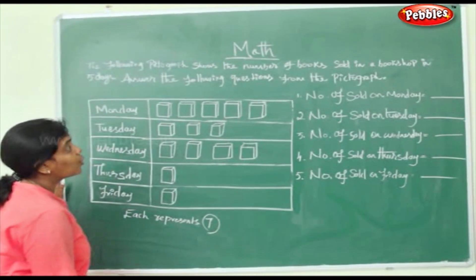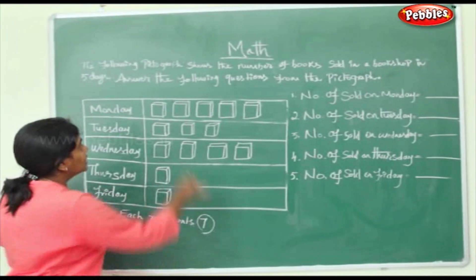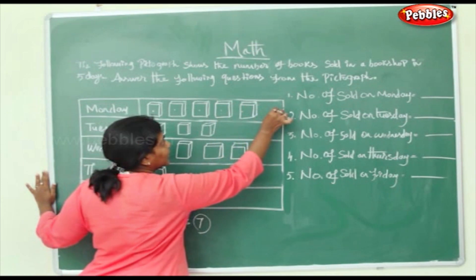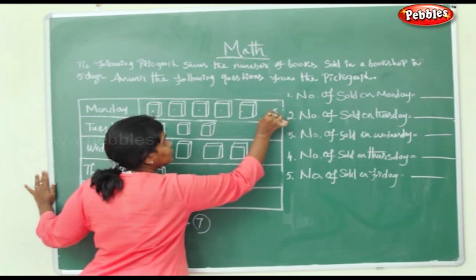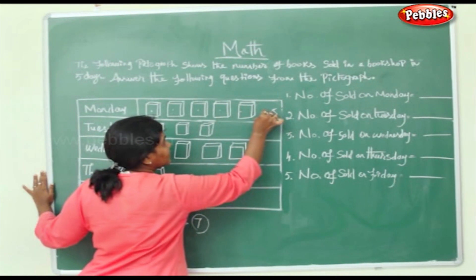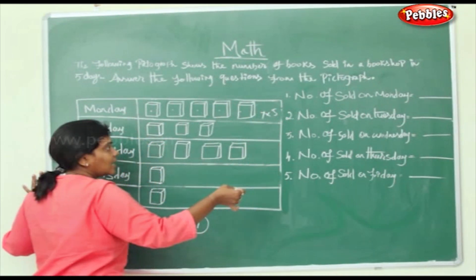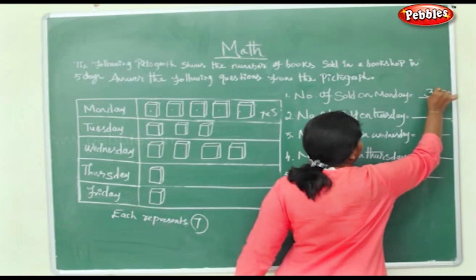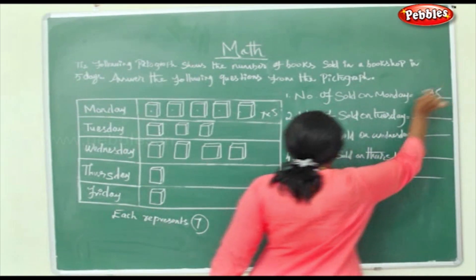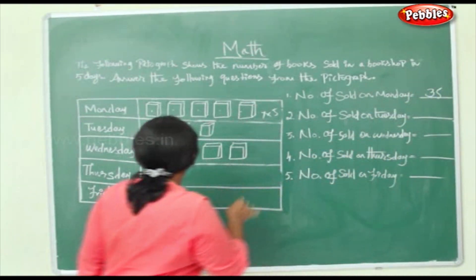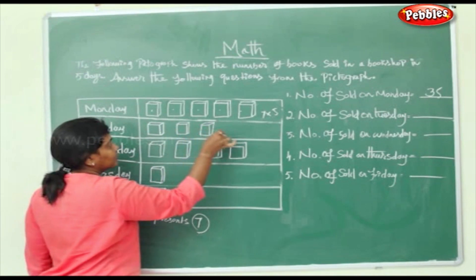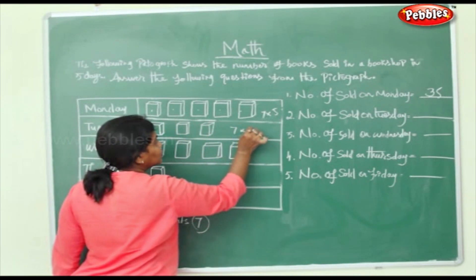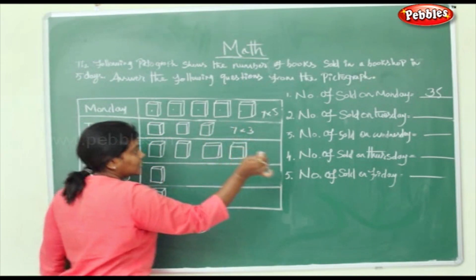Numbers sold on Monday: counting 1, 2, 3, 4, 5 books — that is 5 into 7, which equals 35. On Tuesday: 1, 2, 3 books — 7 into 3 equals 21.